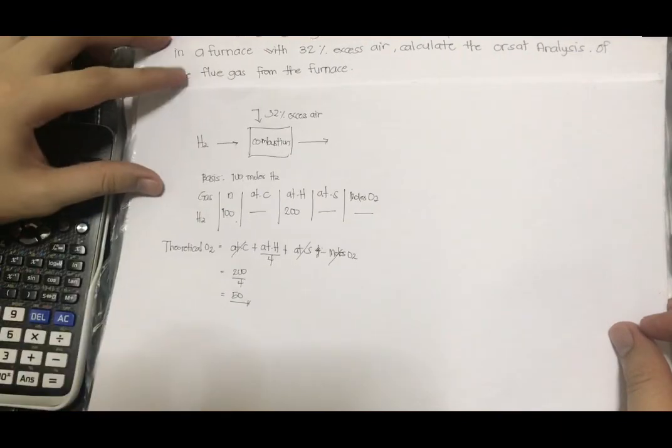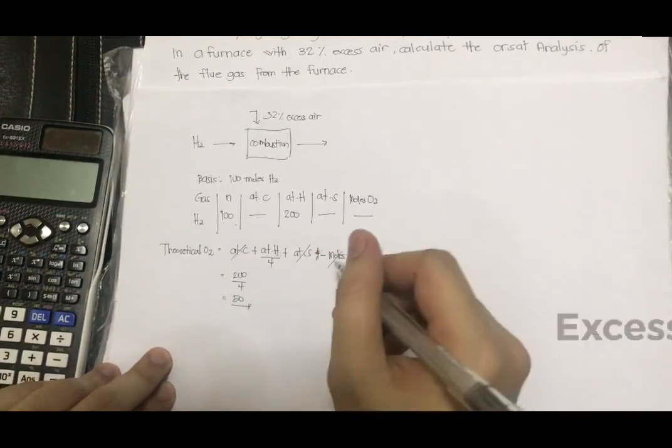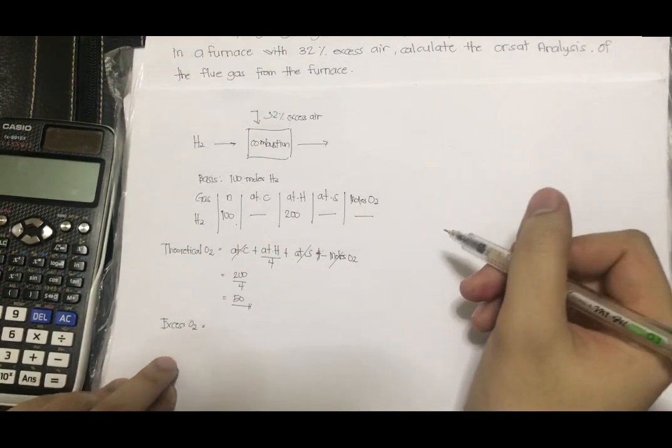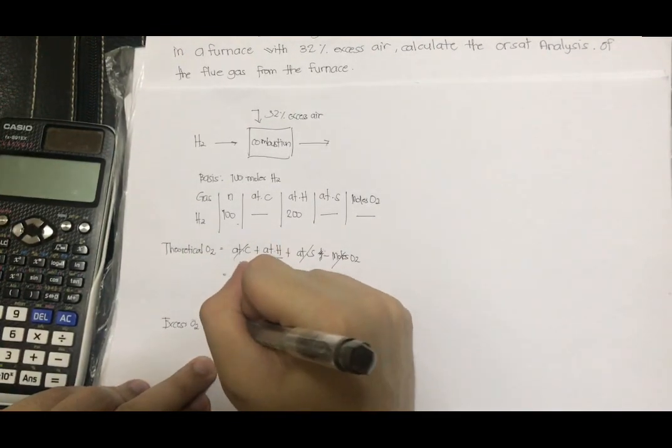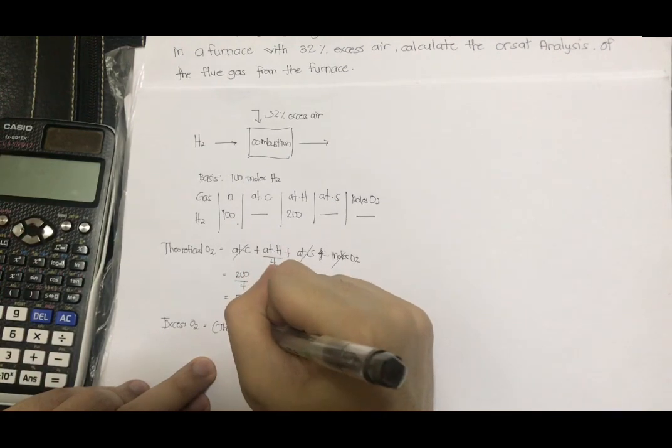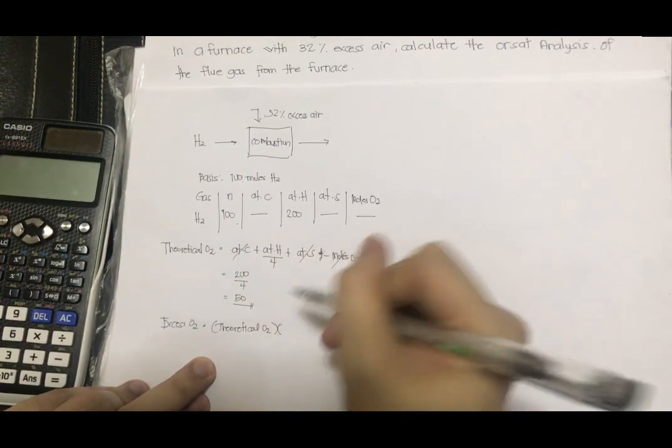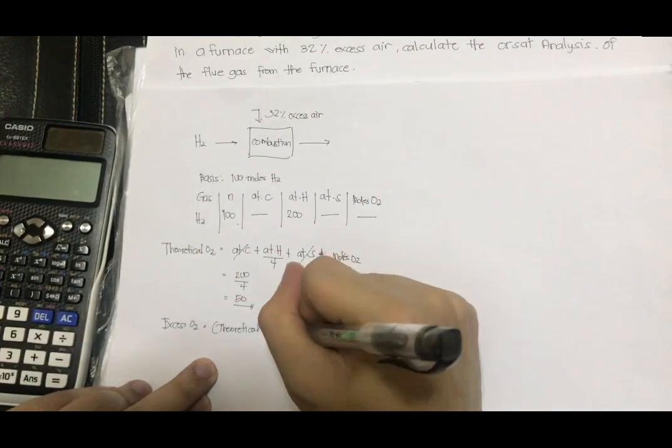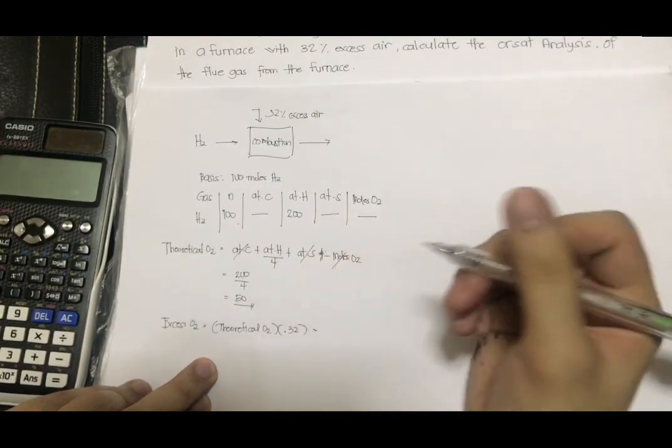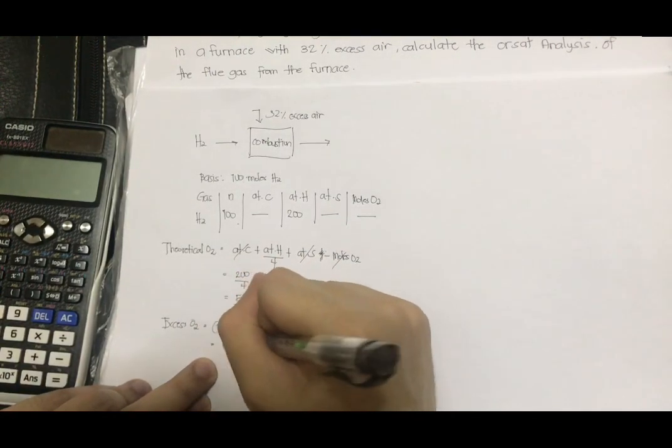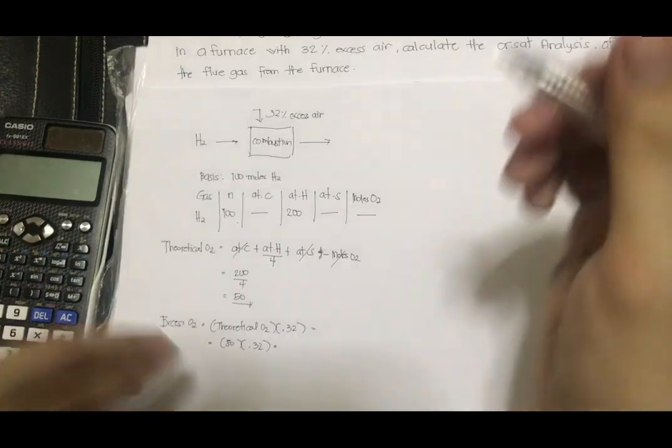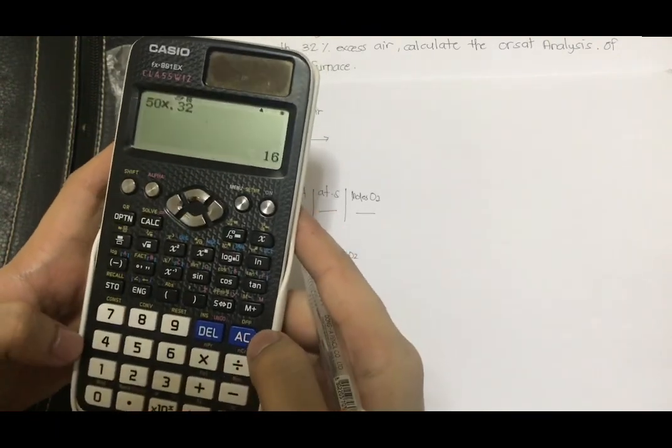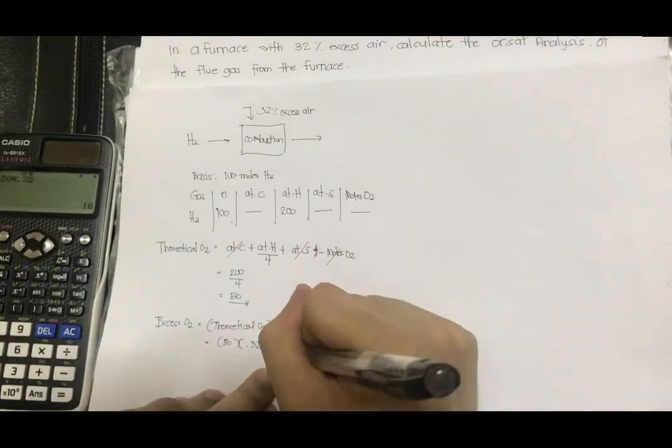Let's proceed with our next formula, which is the excess O2. The formula for our excess O2 is just simply the theoretical O2 multiplied by our given excess air. Our given is 32 percent, so 0.32. So 50 times 0.32. Using the calculator, that's 16.